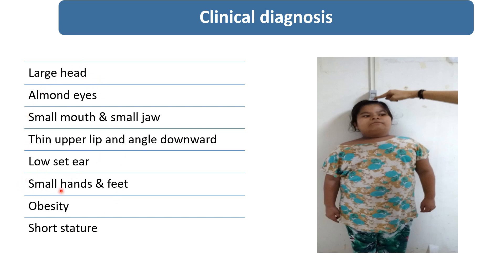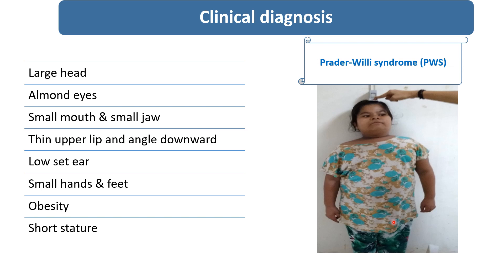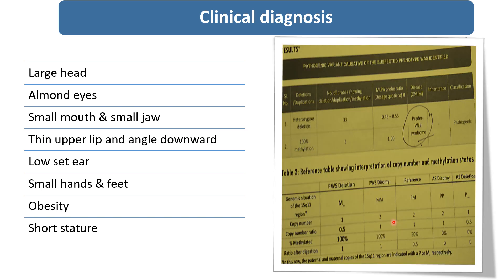On the basis of all these characteristic clinical findings — dysmorphic facial features, small hands and feet, obesity, and short stature — the clinical diagnosis is Prader-Willi syndrome, confirmed by genetic testing. In the image you can see a gene deletion on chromosome 15.